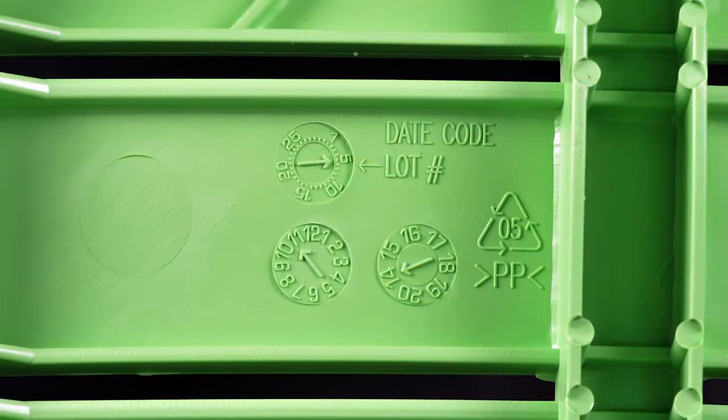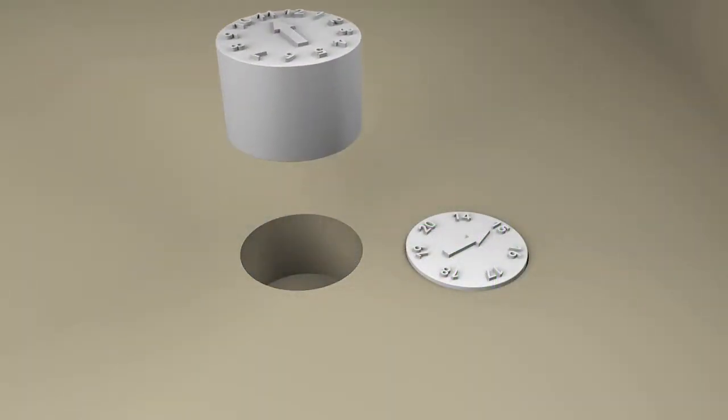Look around you and see how many injection molded objects you can find. Likely, the device you're watching this on has injected molded parts. You should be able to find ejector pin witness marks and parting lines, but you may find something like this. It's a date wheel that shows the month and year the item was made. These are created by removable inserts and can be changed out for each run of the mold. They're very useful for tracking down defects.